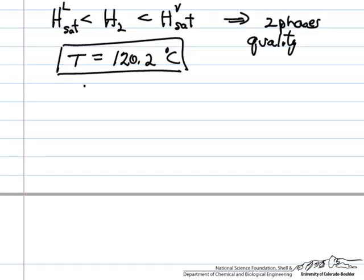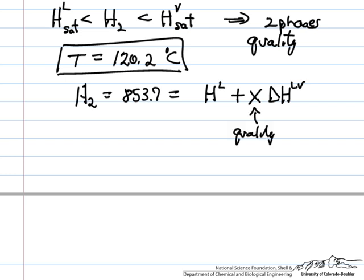So H2, which is 853.7, must equal H for the liquid plus X times delta H, liquid to vapor. In other words we have liquid and we have some fraction that's vapor. X is quality. We can look up these two values from the steam table.